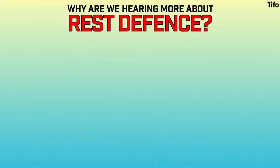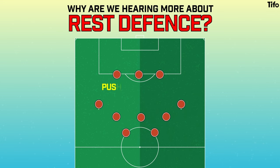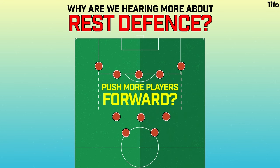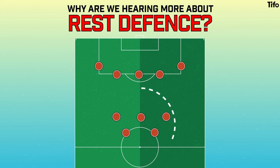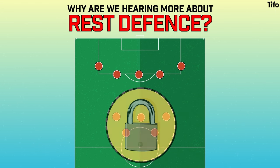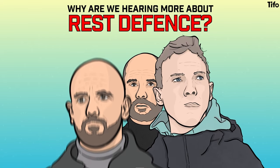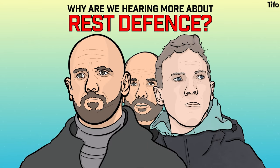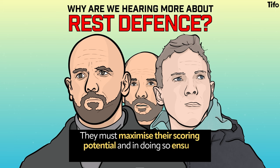So why are we hearing more and more elite managers referencing rest defence in the present day? The answer is fairly simple. Rest defence refers to a team's defensive structure in the attacking phase, but the best way of being an attacking threat is to push more players forward. If you do this, though, you're moving players further away from your goal and weakening your defensive structure if the ball is turned over. You can only commit to pushing more players forwards if you're confident that the players left over — the rest defence — are up to the task of covering the opposition in the event of a counter-attack. For elite managers like Pep Guardiola, Julian Nagelsmann, or Eric Ten Hag, a team's attacking threat stands or falls on the ability of their rest defence to offer their attacking unit protection. These managers need to maximise their scoring potential and, to achieve this, they need to make sure their rest defence is perfect. To reverse the old adage slightly: rest defence is the best form of attack.